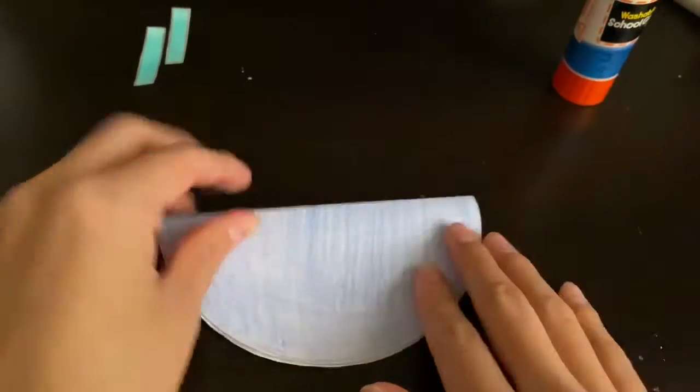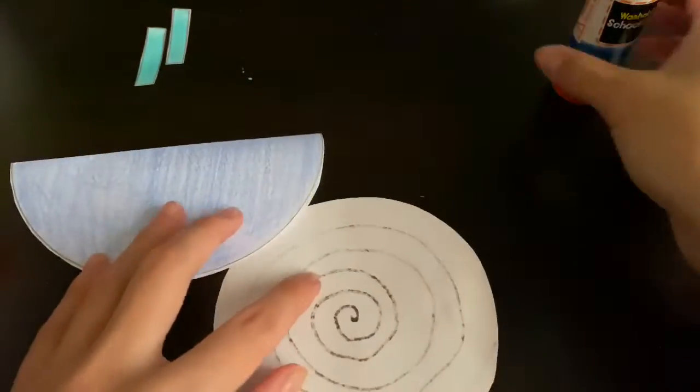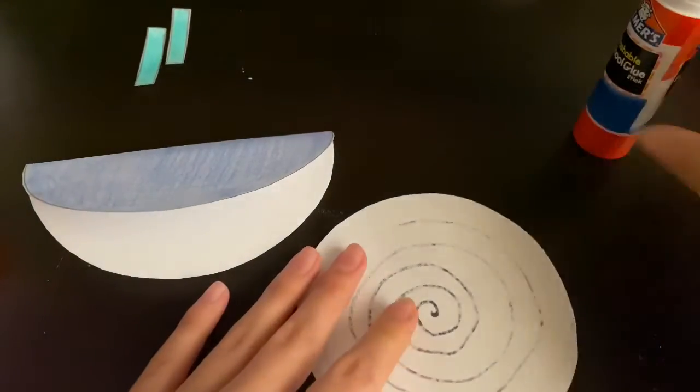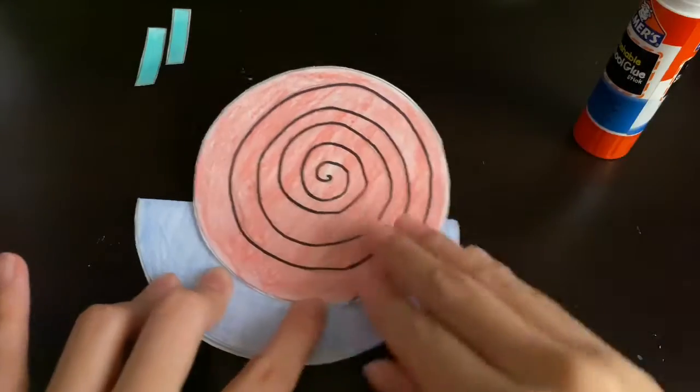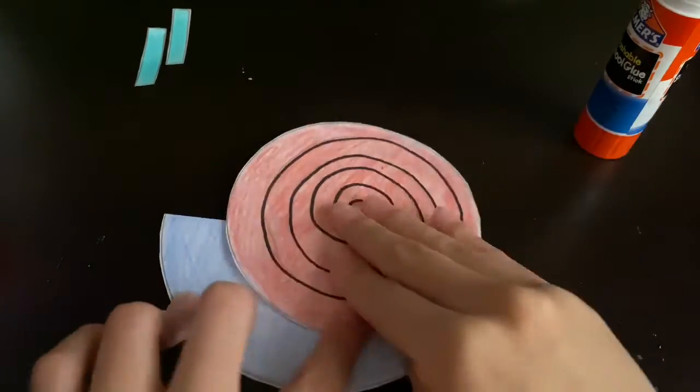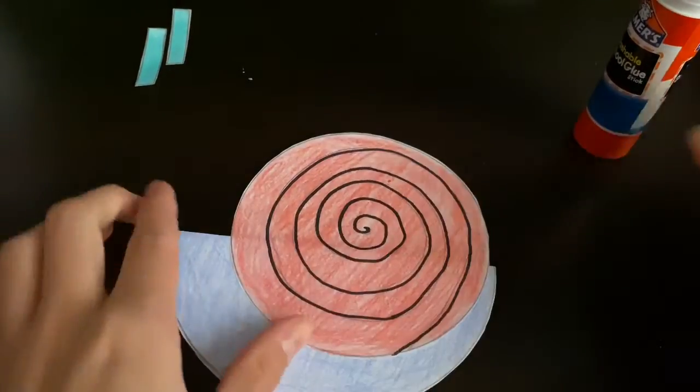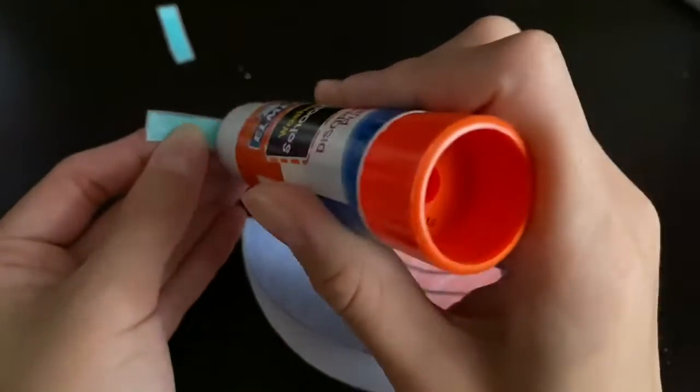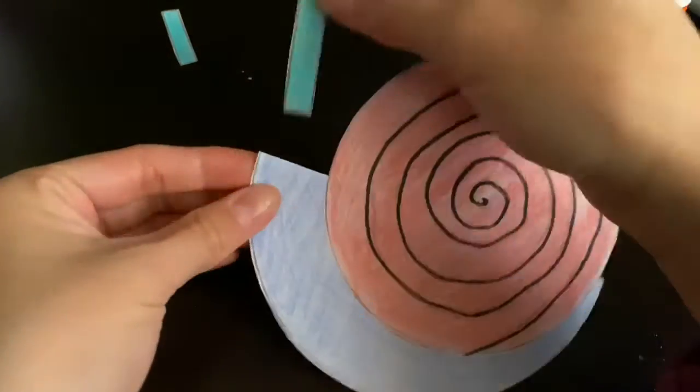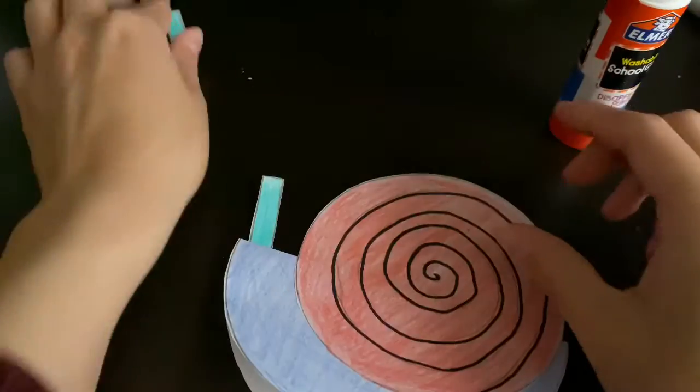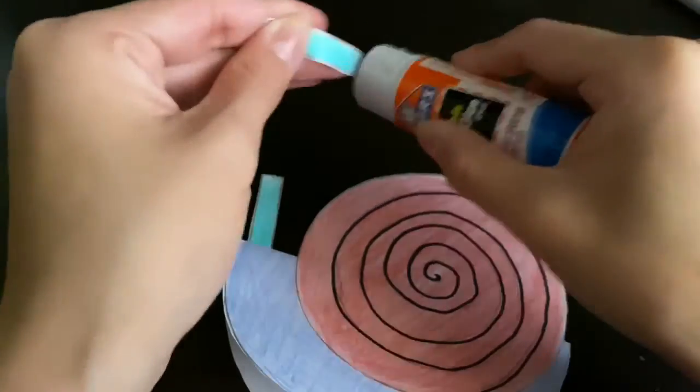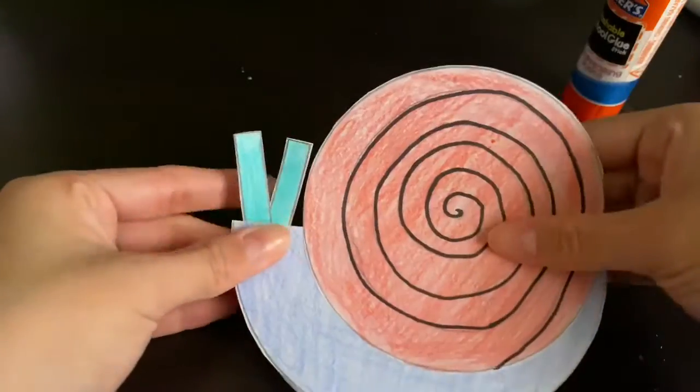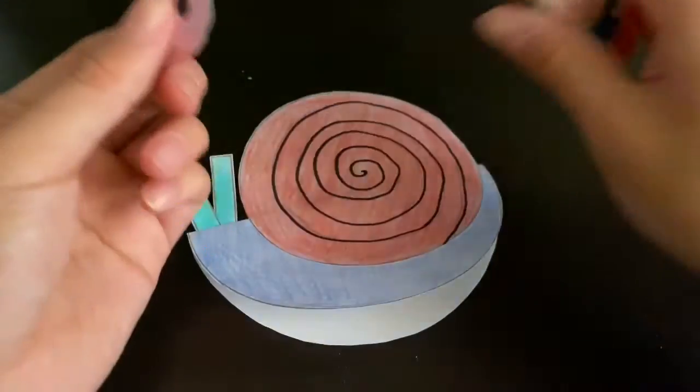After you did that we're gonna grab our shell and place and glue it on top. Then we're gonna grab our rectangles and glue them on. Now we're gonna grab our eyes and glue them on.